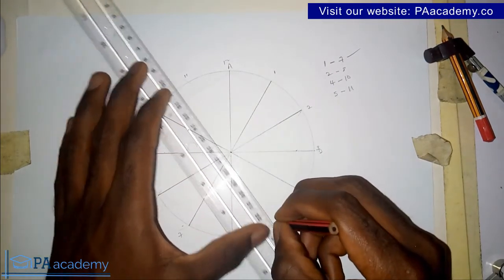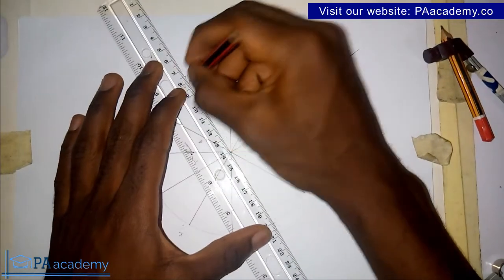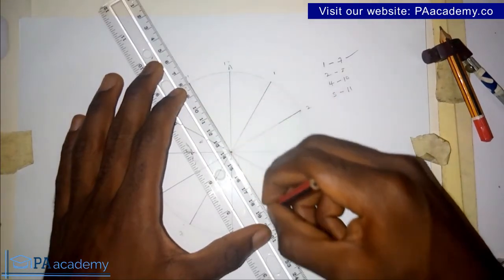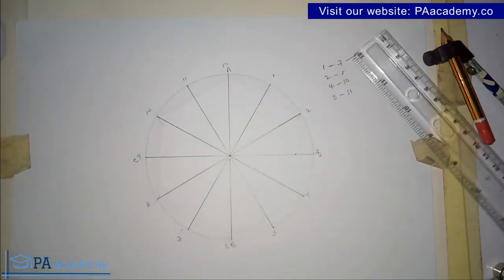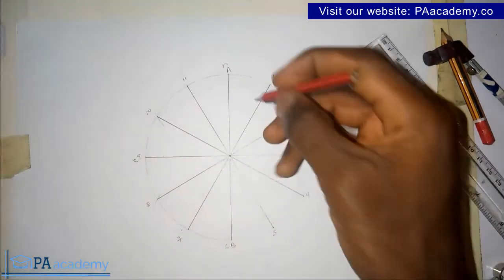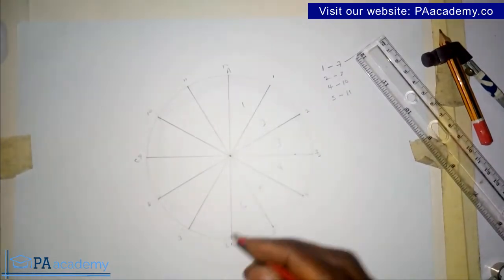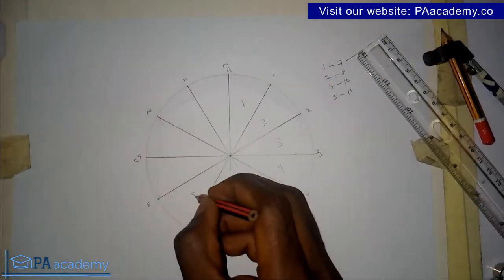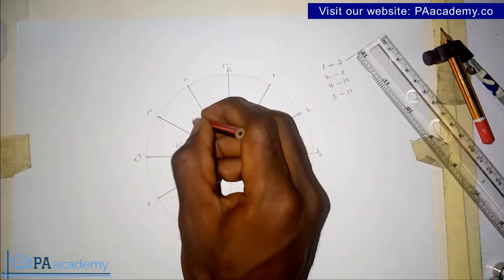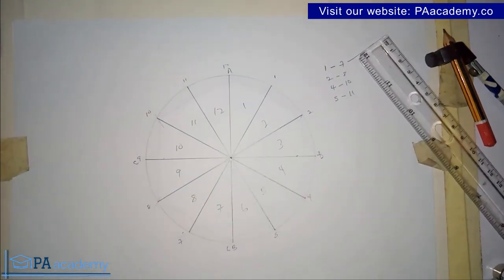So you can see now we've been able to divide the circle into twelve equal parts. This is one, two, three, four, five, six, seven, eight, nine, ten, eleven, and twelve. We've been able to divide the circle into twelve equal parts.